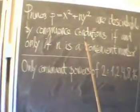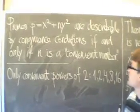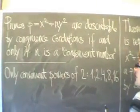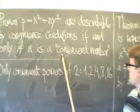More generally, we have that the primes representable by this general form are describable by congruence conditions, but only if n is one of Euler's so-called convenient numbers.